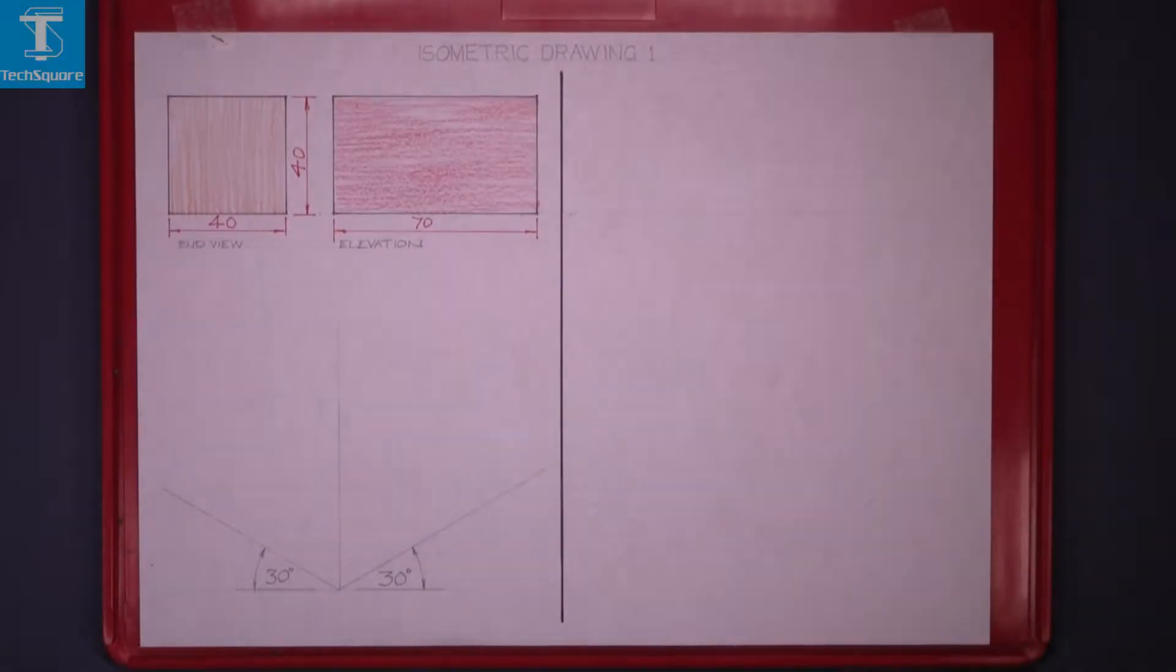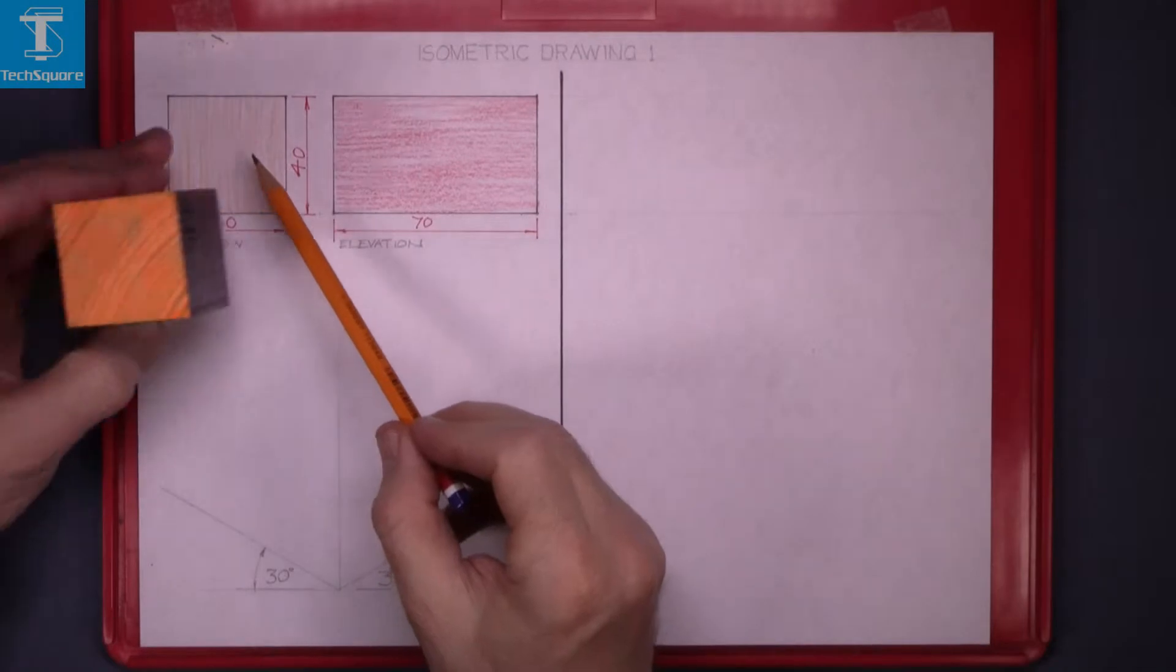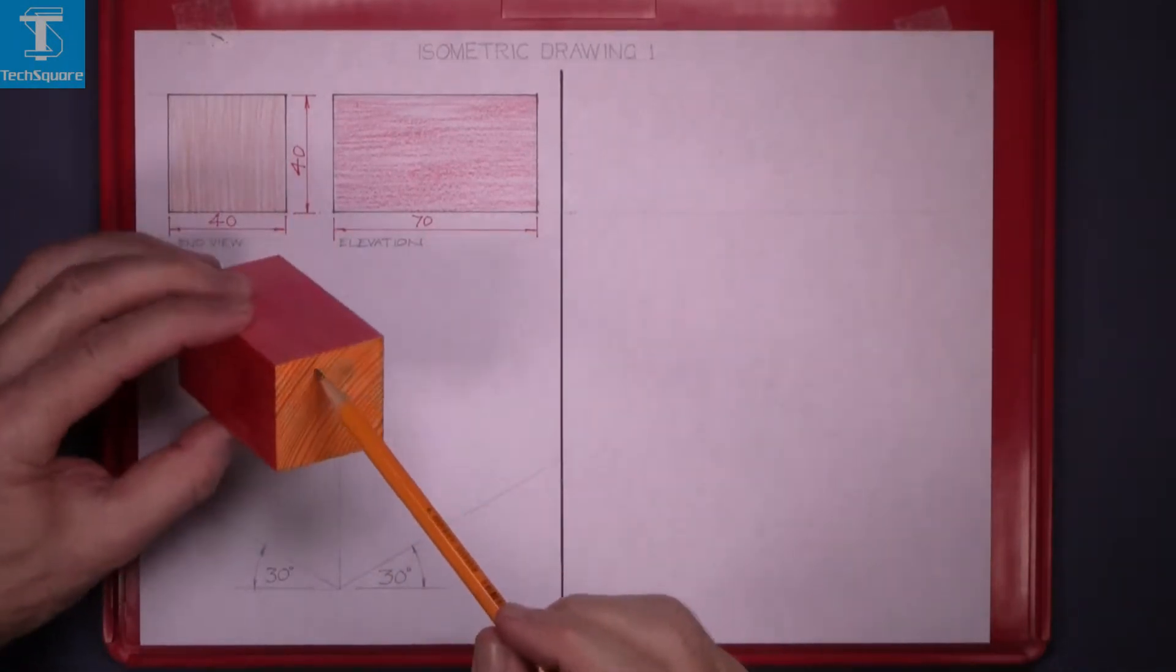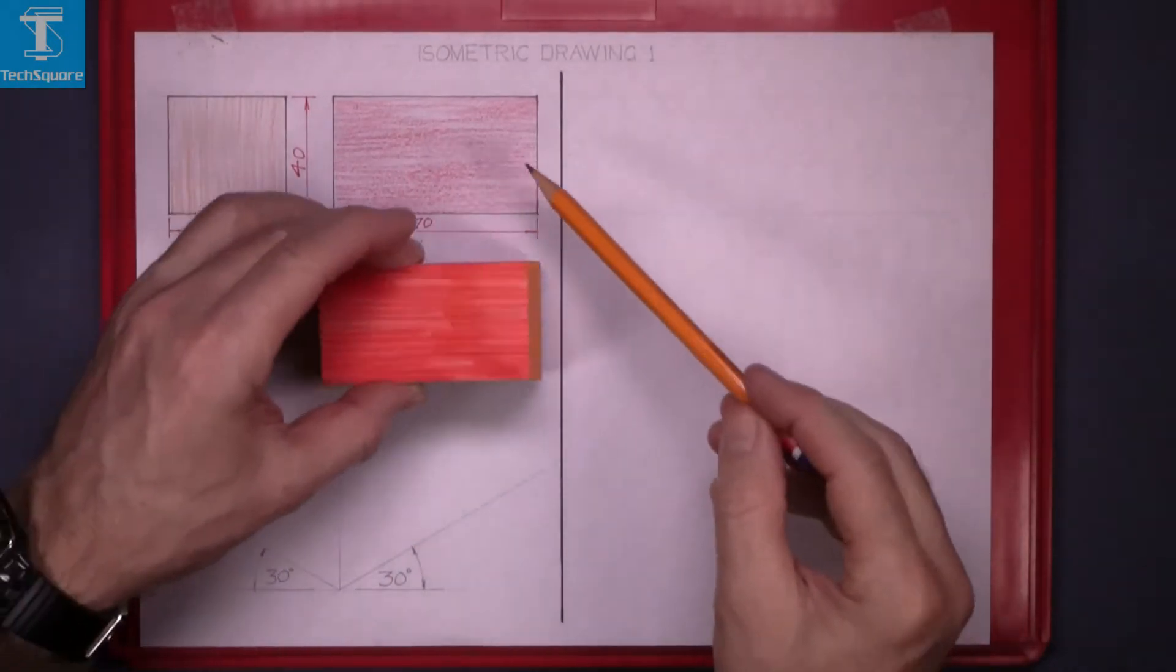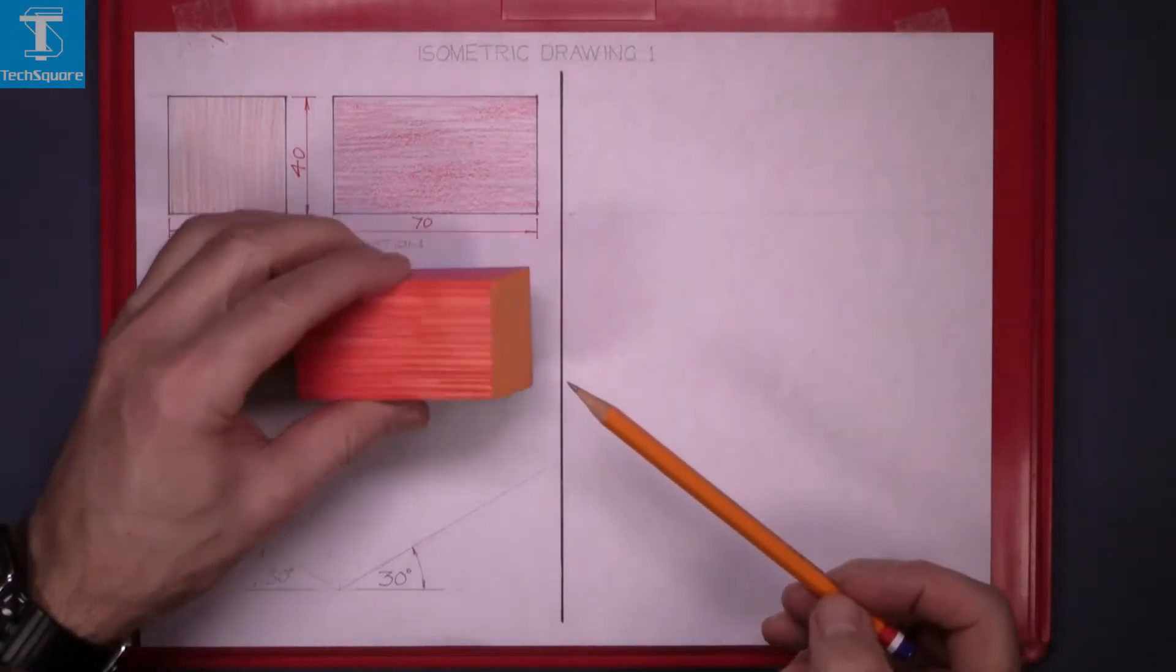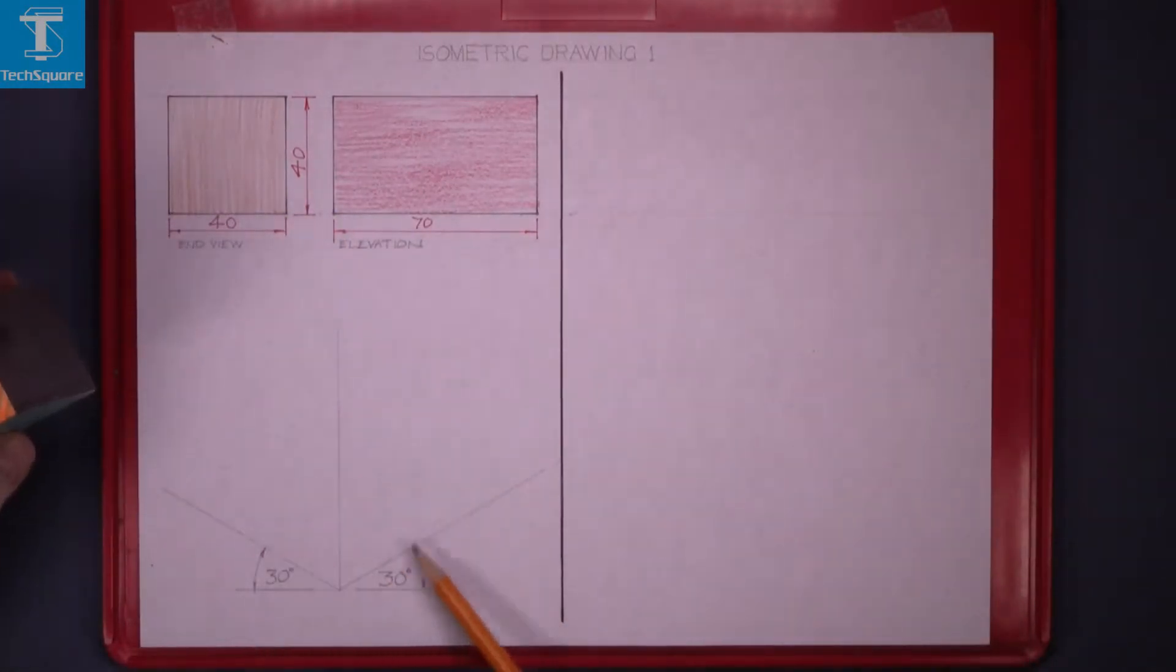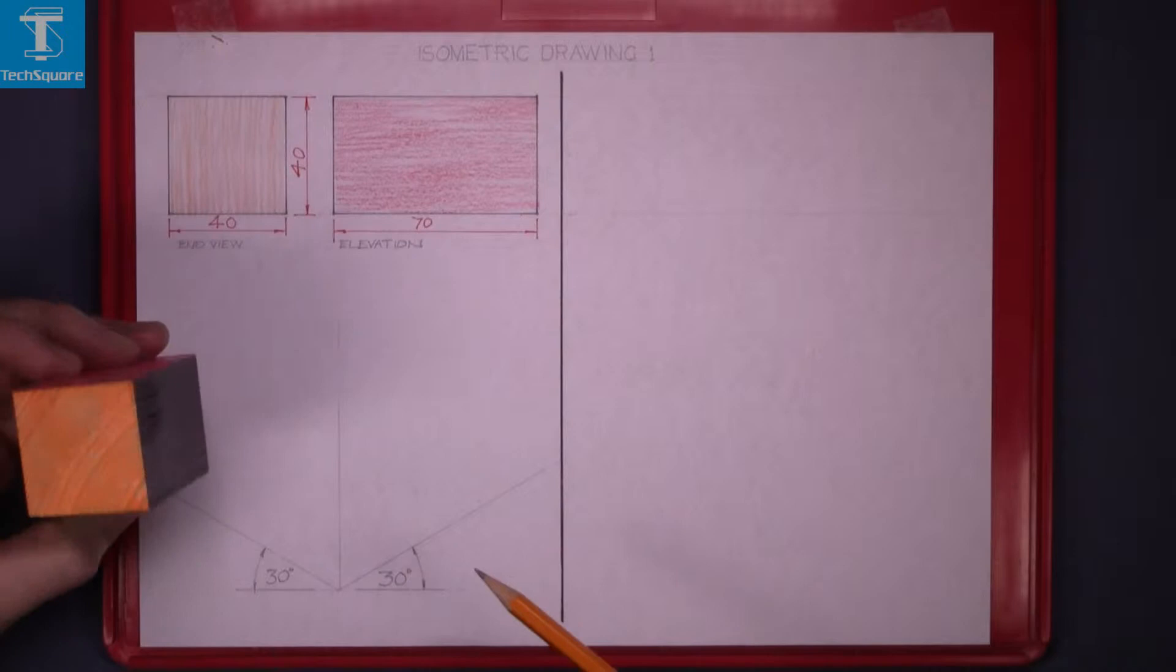Isometric drawing 1. We are given the end view of this block of timber and the elevation, and we are told to draw the isometric drawing.